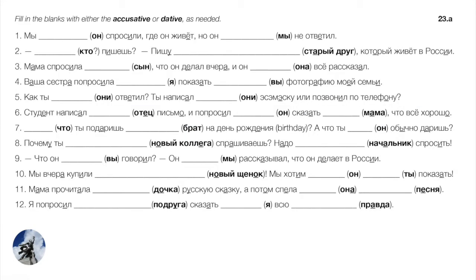Make sure you know those pairs fairly well. Exercise 23a: Мы спросили blank — we asked him where he lives, but he didn't answer. First blank: accusative, because the asking verb always takes accusative. Мы его спросили, где он живёт? But he didn't respond to us — answering is one of those verbs that does take the dative. Он нам не ответил.